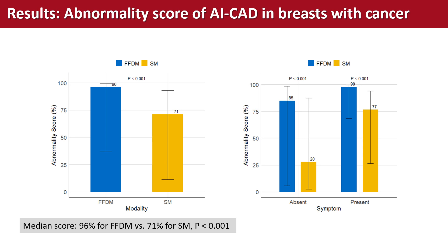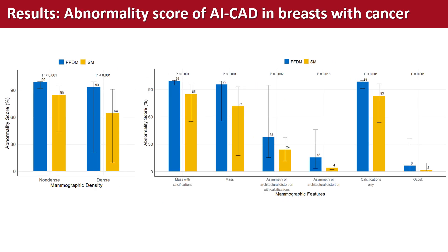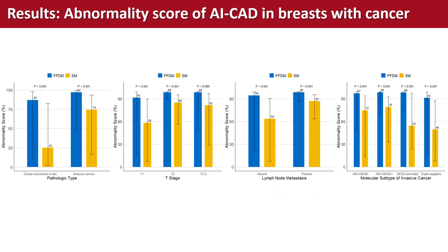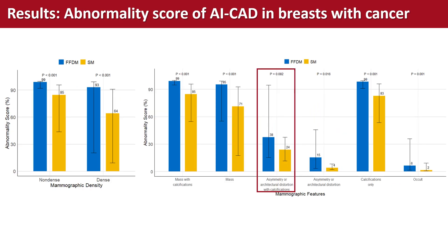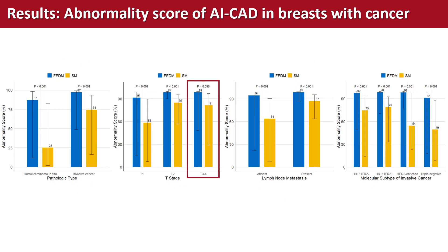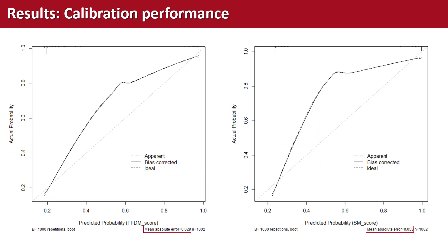The overall median score of synthetic mammography was significantly lower than that of digital mammography in breasts with cancer. Synthetic mammography generally exhibited significantly lower median scores across subgroups categorized by symptom, mammographic, and pathologic characteristics, except for asymmetry or architectural distortion with microcalcifications and T3 to T4 stage cancers — likely attributable to small sample sizes. The calibration curve for synthetic mammography demonstrated greater deviation from the ideal line, indicating inferior calibration performance.